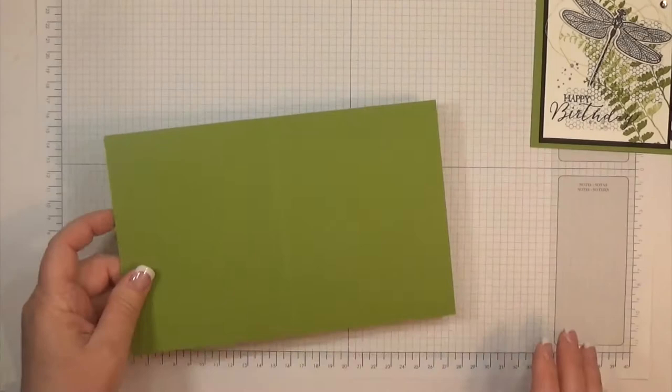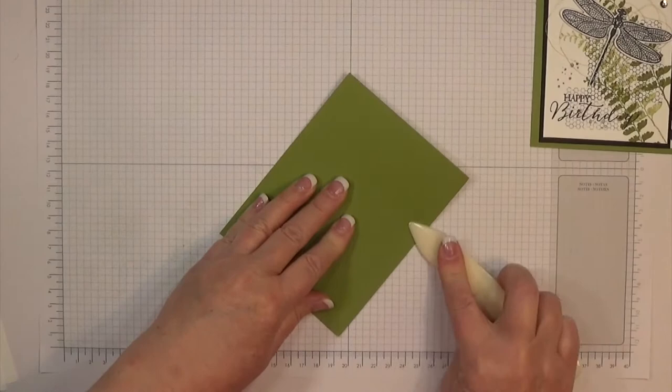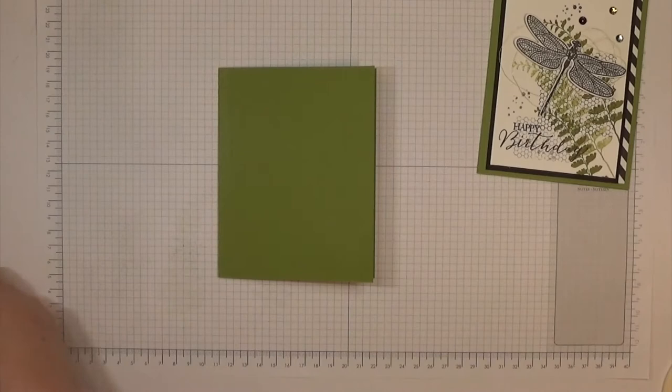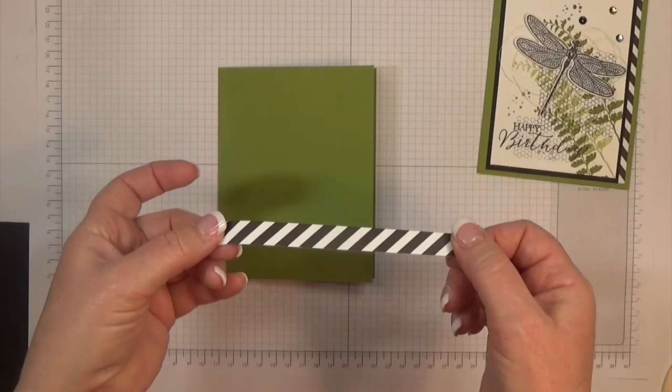I'm starting with a piece of five and a half by eight and a half inch cardstock. This is Old Olive, one of Stampin' Up's green colors in the brights collection. For a list of all the products I'm using in today's video, if you're interested, they are in the links below the YouTube video or on my blog, theplaidpoodle.com.